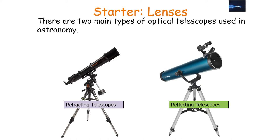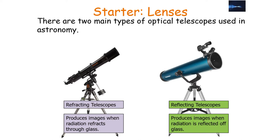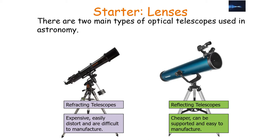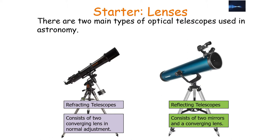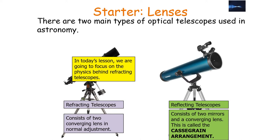There are two main types of optical telescopes: refracting telescopes and reflecting telescopes. Refracting telescopes produce images when radiation refracts through glass, whilst reflecting telescopes produce images when radiation is reflected off the glass. Refracting telescopes are expensive, easily distorted, and difficult to manufacture, whilst reflecting telescopes are cheaper, can be supported, and are easy to manufacture. Refracting telescopes suffer from chromatic aberration whilst reflecting telescopes suffer from spherical aberration.